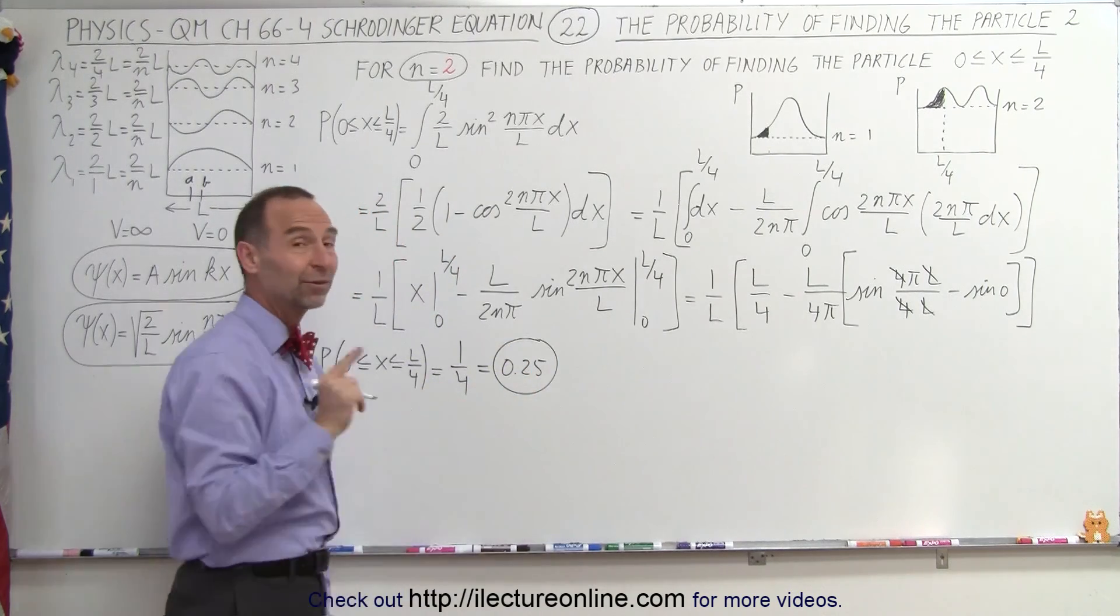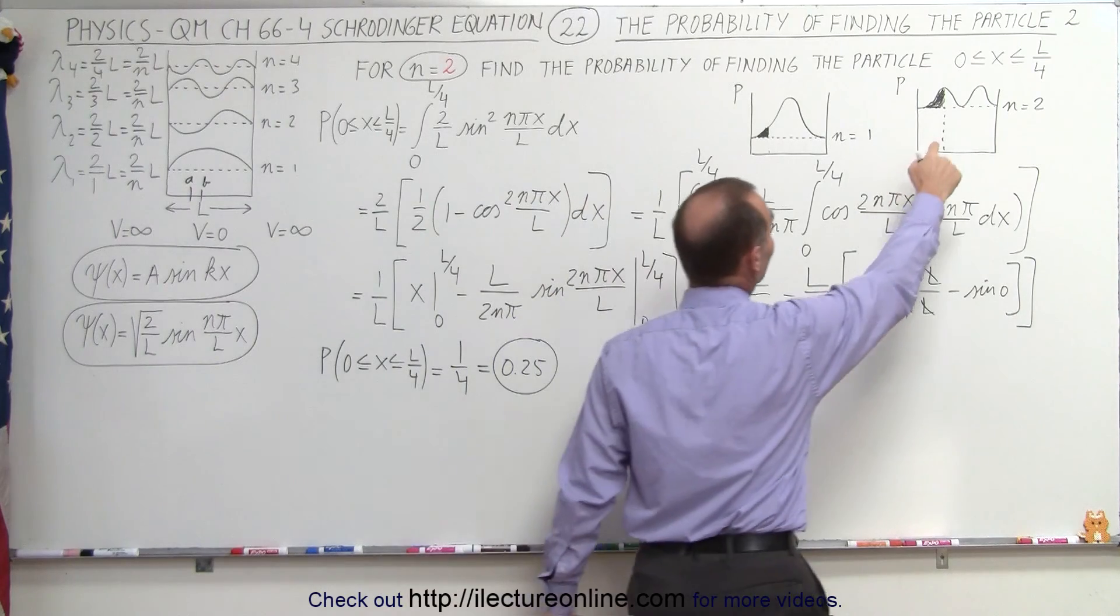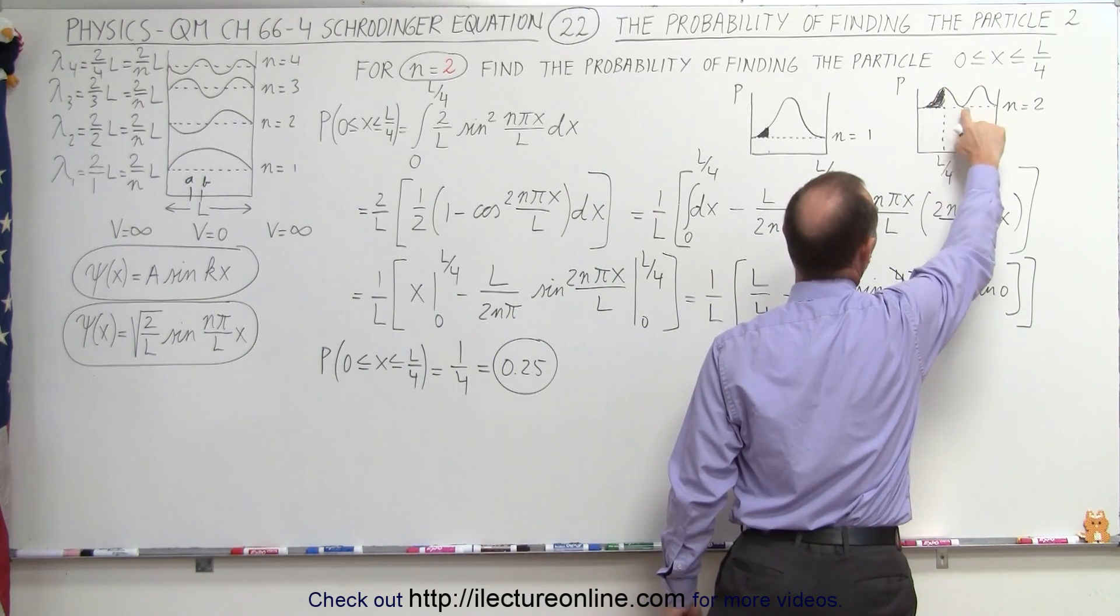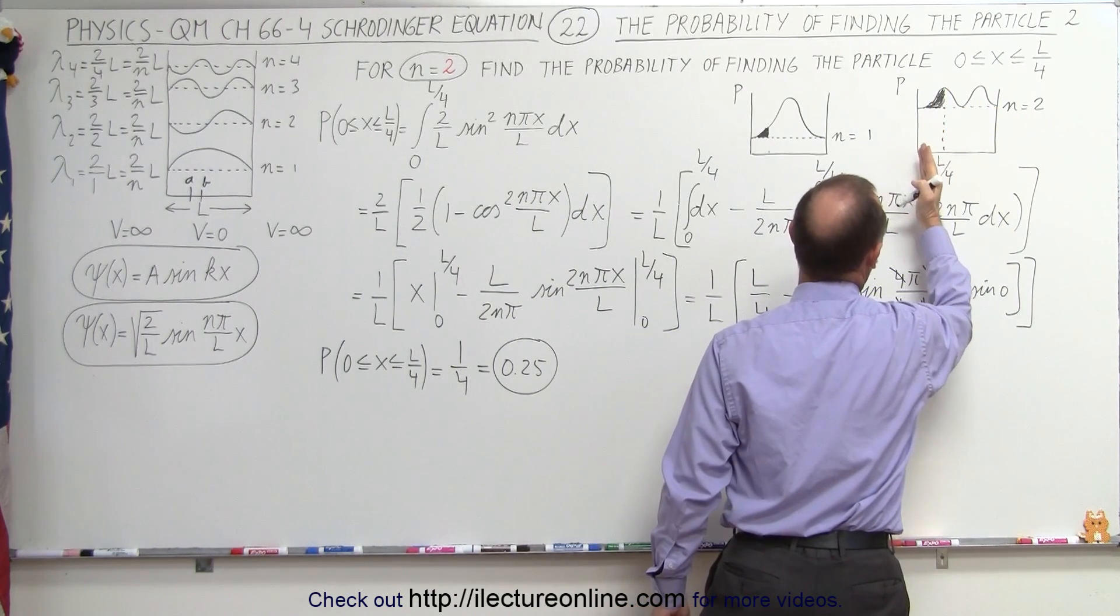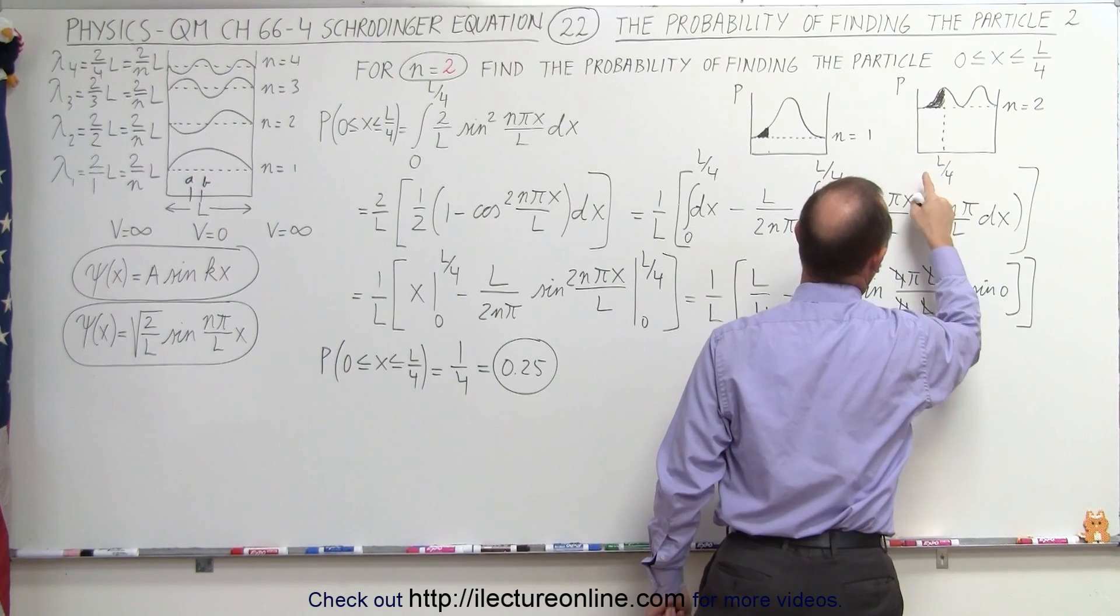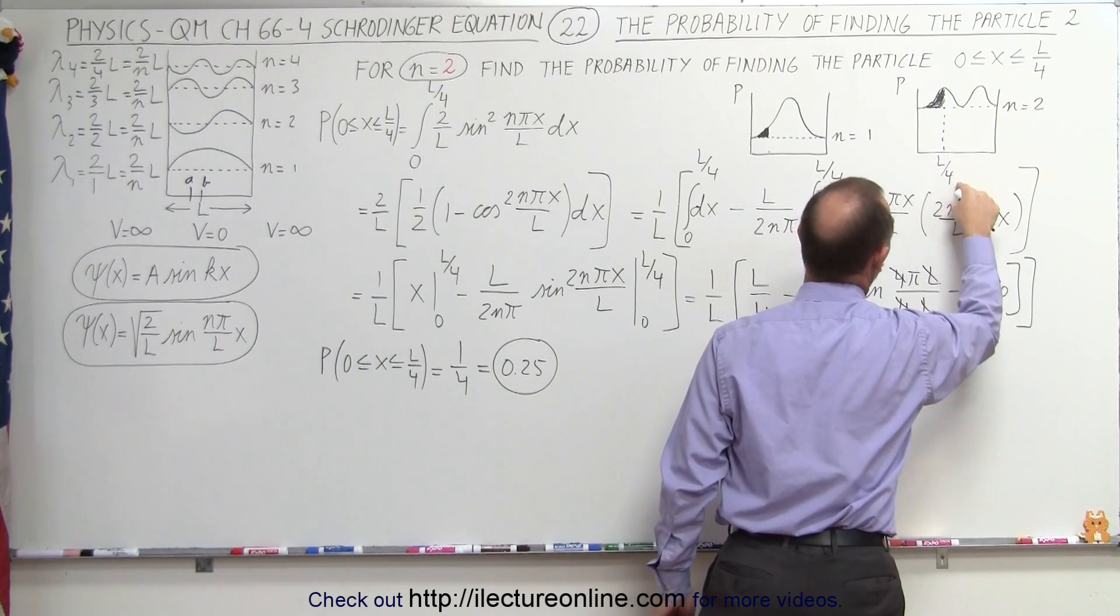The exact result we were expecting when we take a look at the probability function here, realizing because of the symmetry, the particle has a probability of 25% of being between 0 and L over 4.